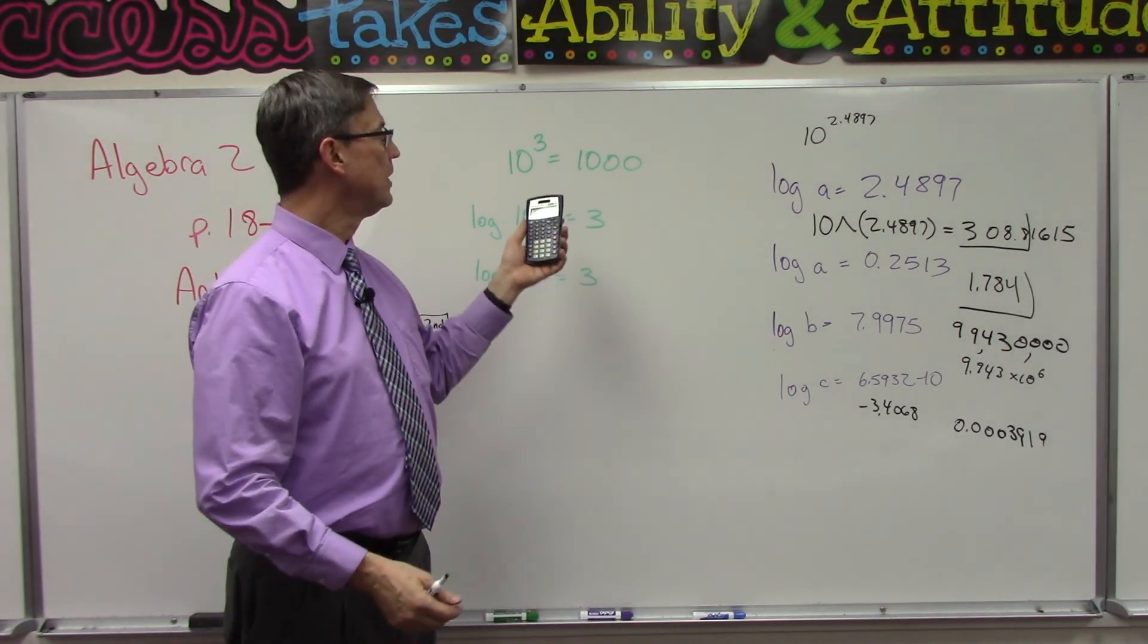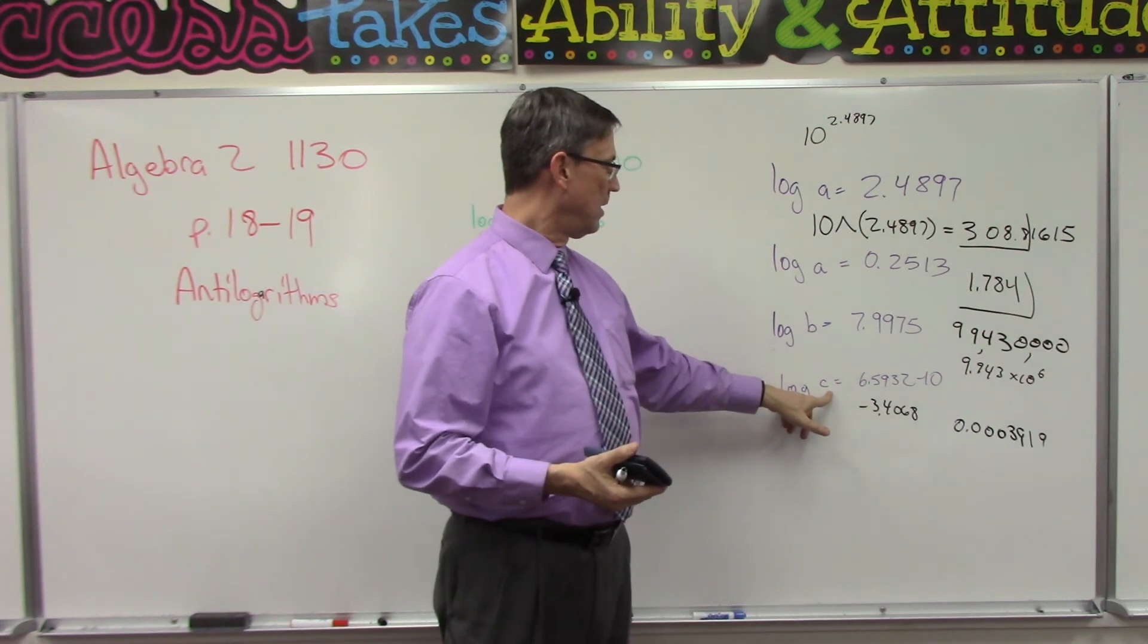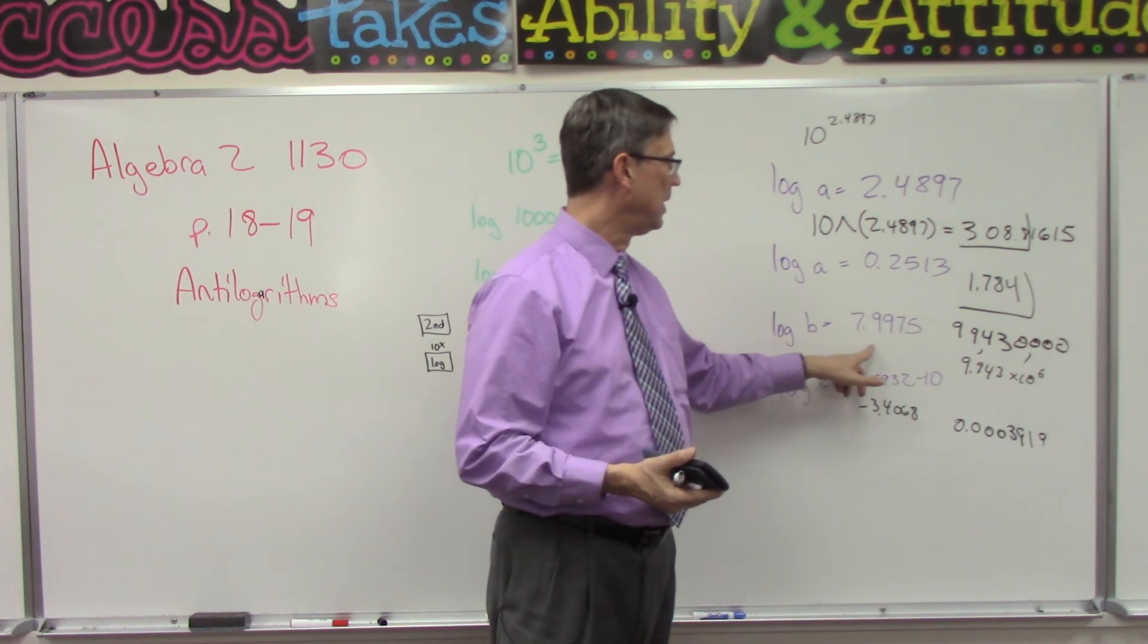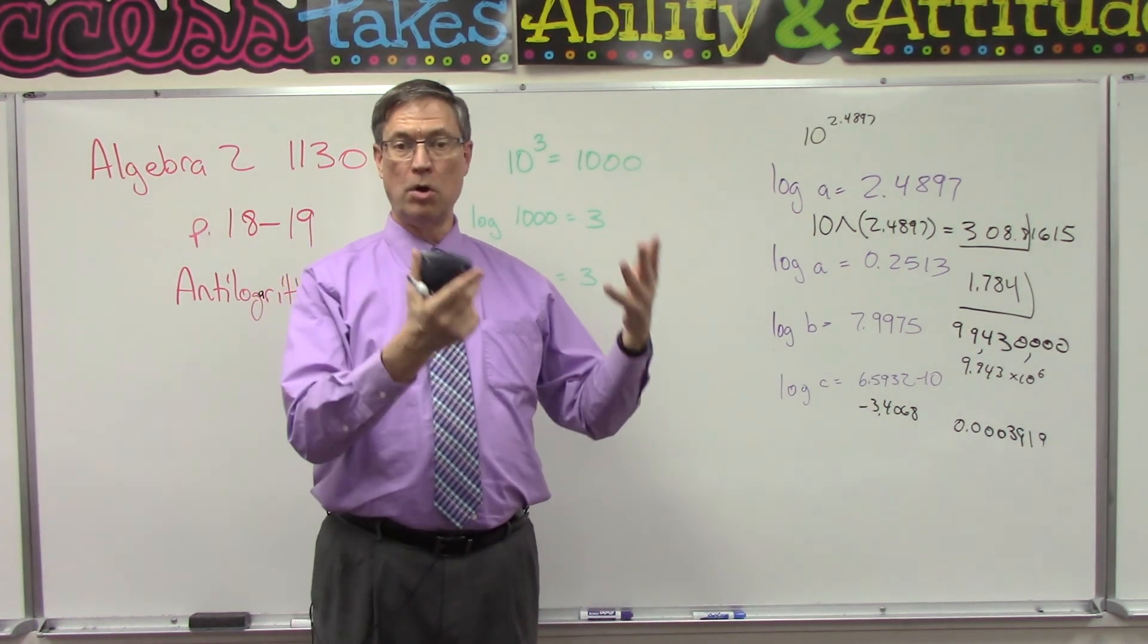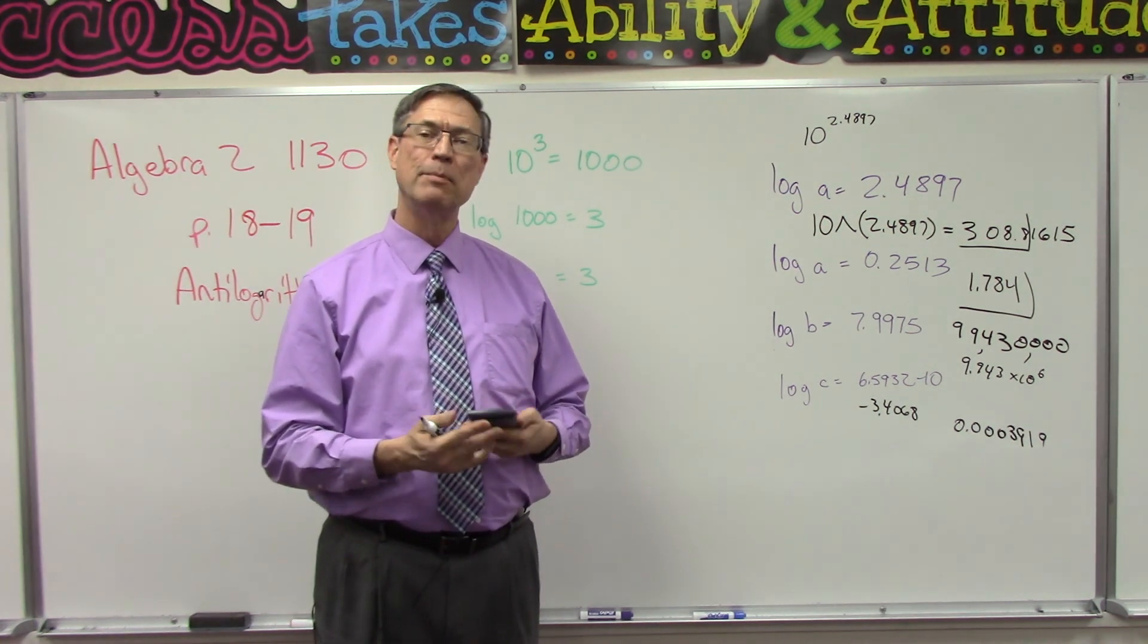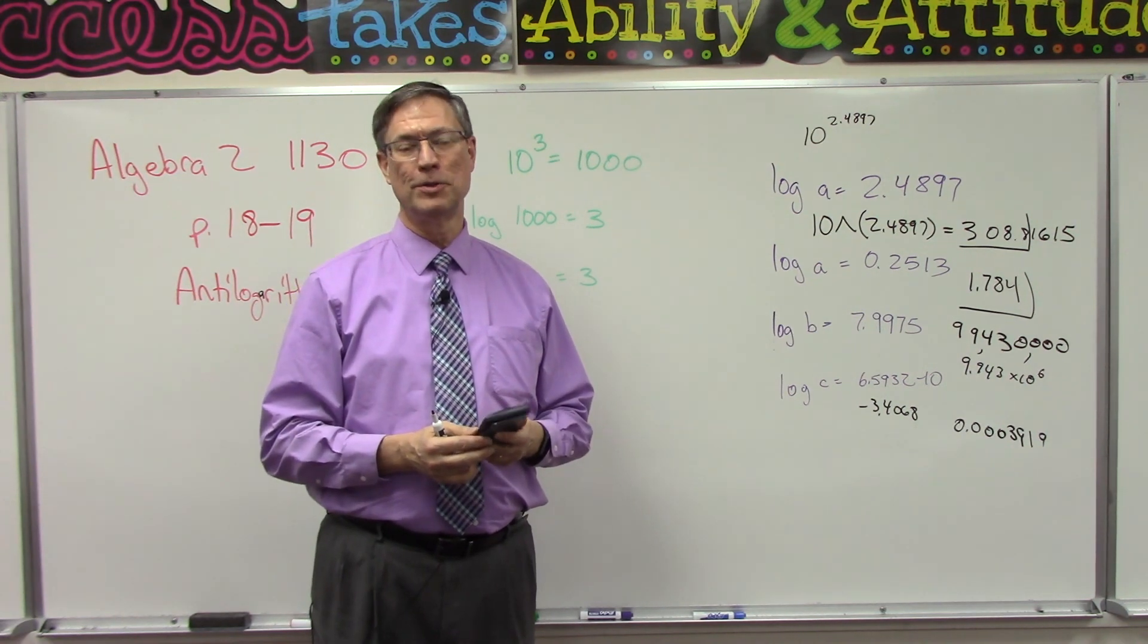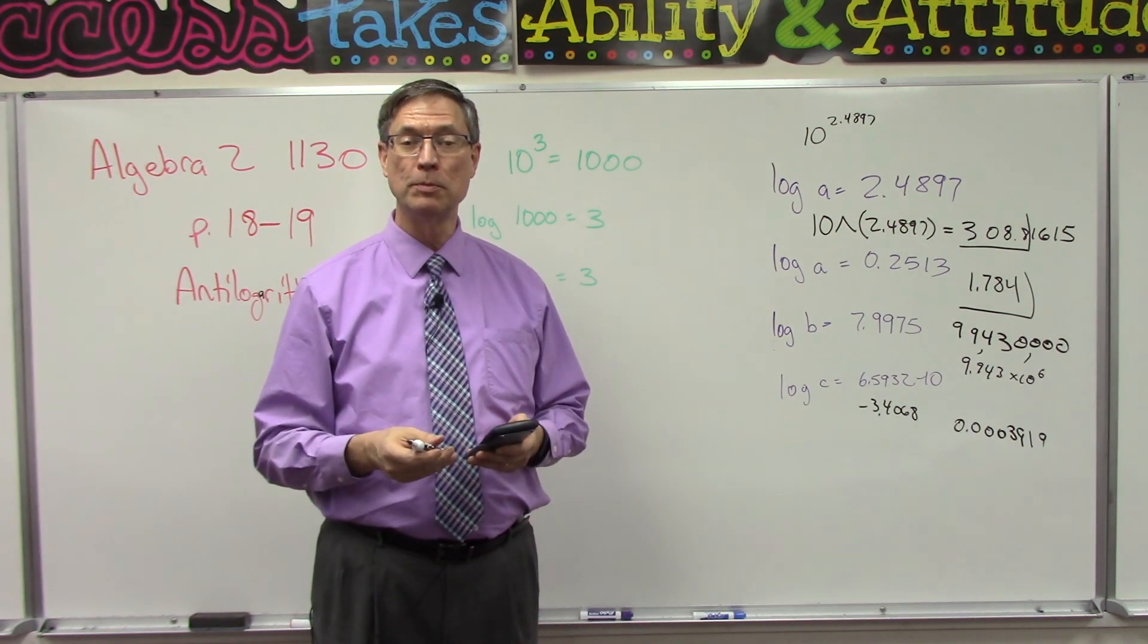So this is called the antilog. You're finding the number that you would get if you had 10 raised to the given exponent. Now if you want to have some fun, I mean look at all the steps that are involved if you were to try to follow the page. But then appreciate, say thank you Lord for calculators, and have fun with it. All right, should be a lot easier for you.